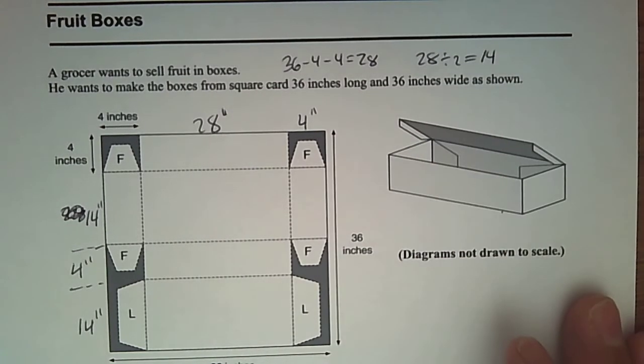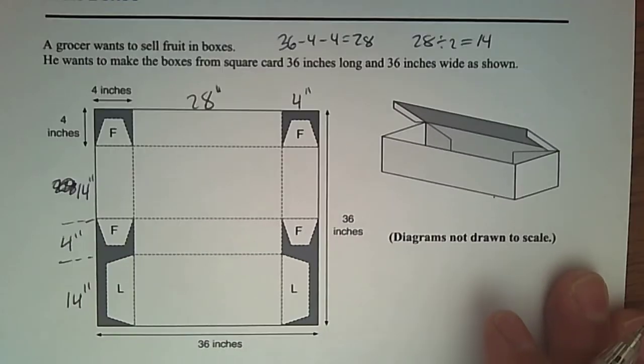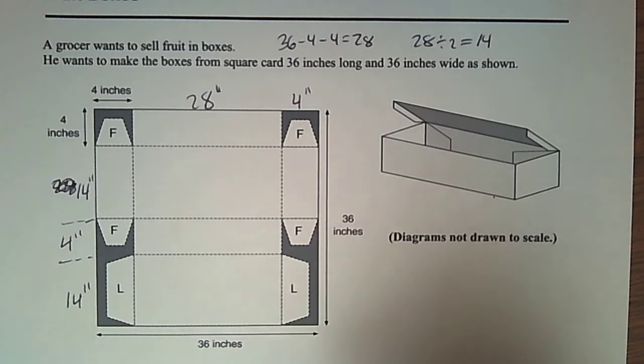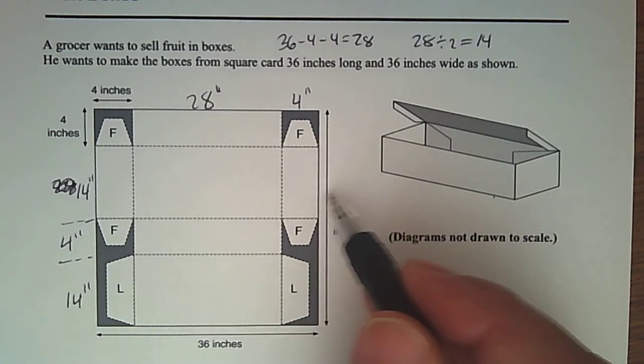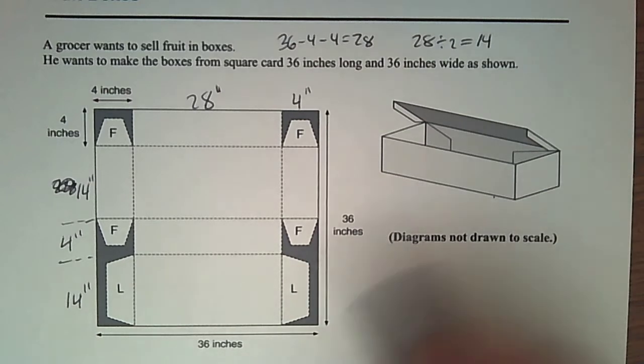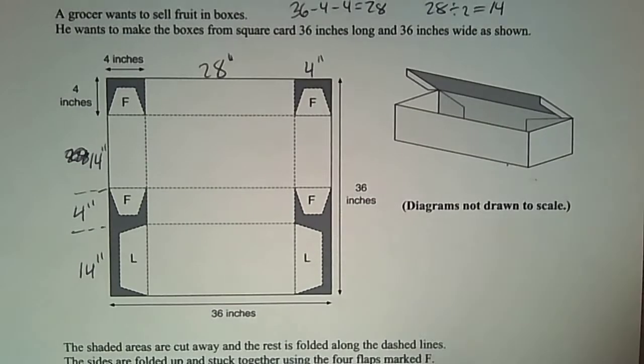This problem has to do with fruit boxes. A grocer wants to sell fruit in boxes. He wants to make the boxes from a square cardboard that's 36 inches by 36 inches. You can see the shaded areas that are going to be cut out. It folds up and makes the box you see on the right side.